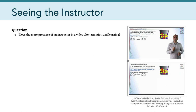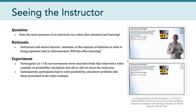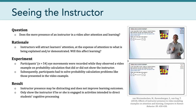Another research question was: does seeing the instructor matter? The question posed was whether the mere presence of an instructor in a video alters attention and learning. The rationale was that instructors will attract learners' attention, but possibly at the expense of attention to what is being explained or demonstrated. The researchers set up an experiment tracking eye movements as participants observed a video. They found that instructor presence may be distracting and does not actually improve learning outcomes. They argued we should only show the instructor if he or she is engaged in activities intended to direct students' cognitive processing.